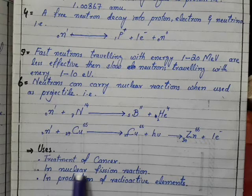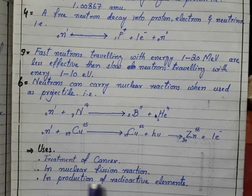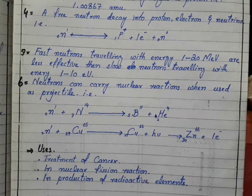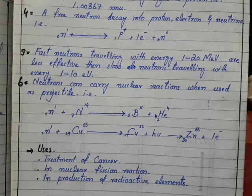These neutrons are very useful particles used in different scientific works. Uses of neutrons include treatment of cancer, nuclear fusion reactions, and production of radioactive elements. Thank you so much. Next lecture will be discovery of nucleus and atomic models. Questions and queries in the inbox or comment section. Thank you.